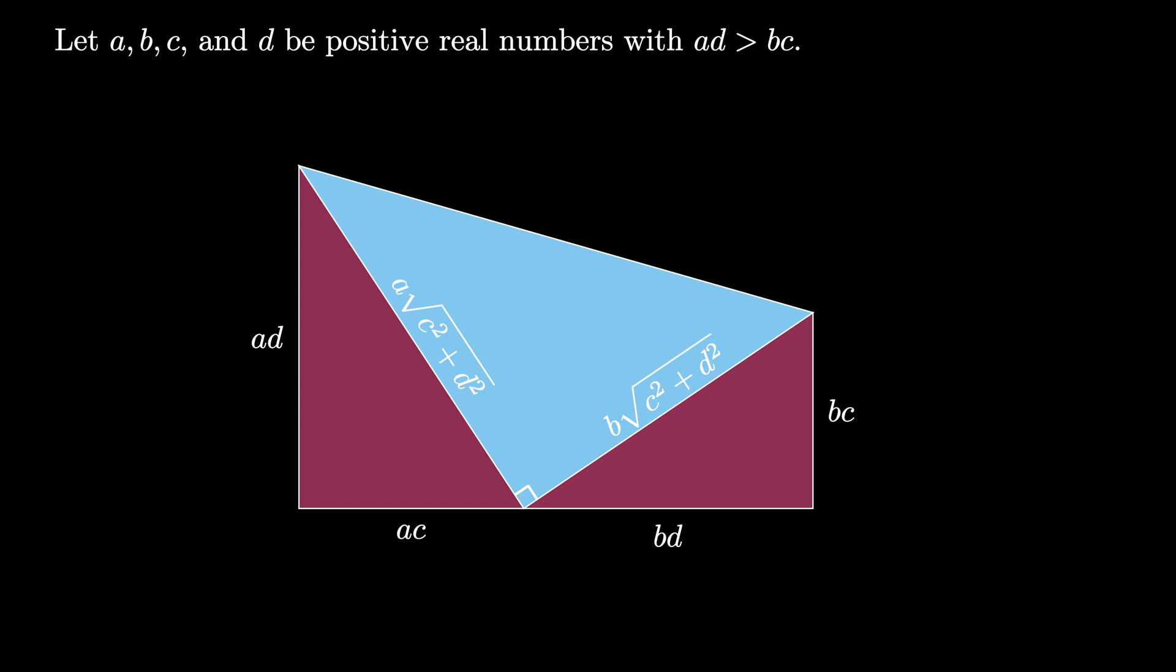So we can then use the Pythagorean theorem to find the final side length or the hypotenuse of the blue triangle to be the square root of A squared plus B squared times the square root of C squared plus D squared.